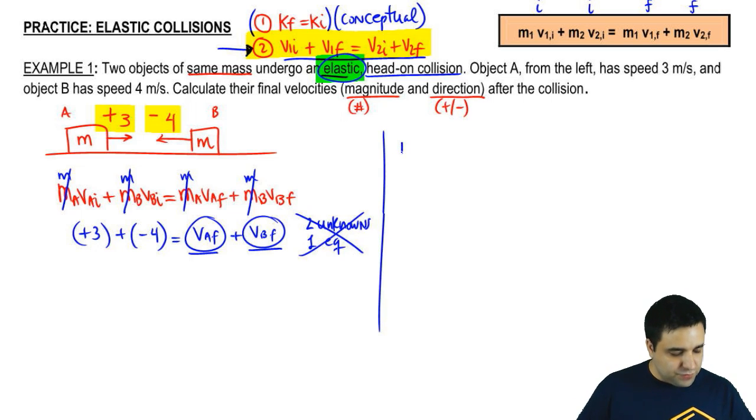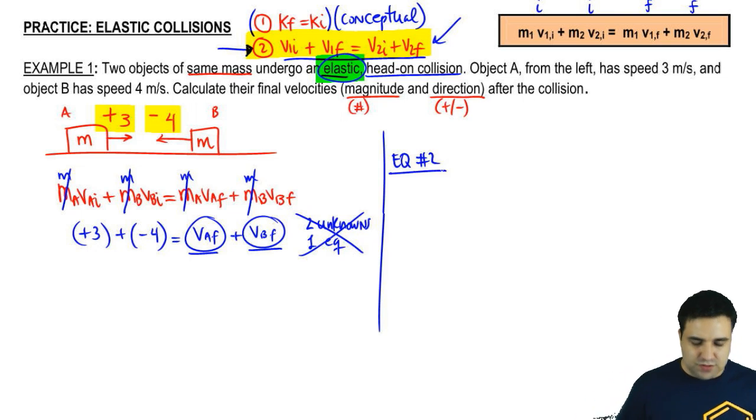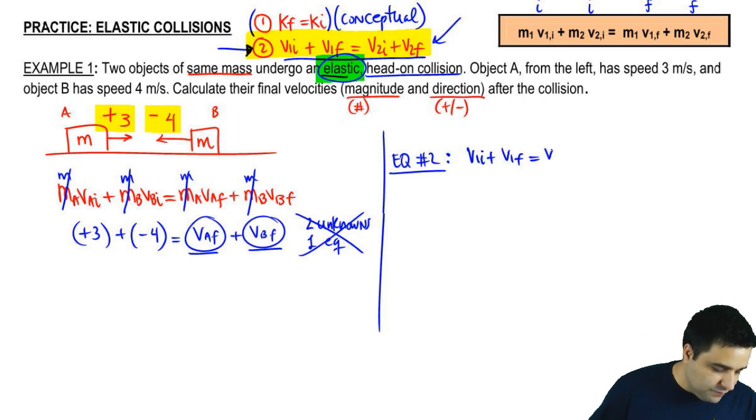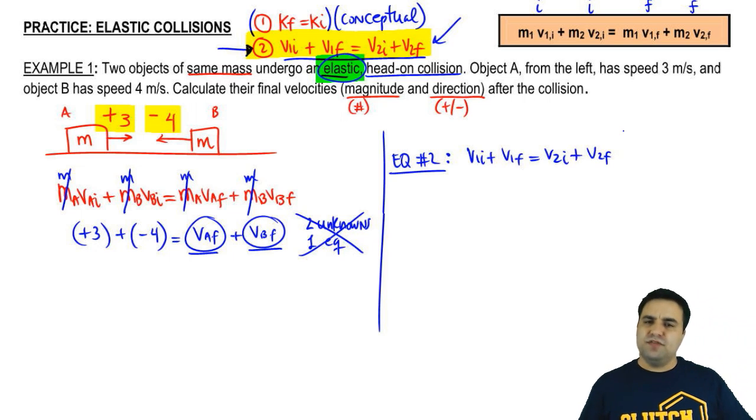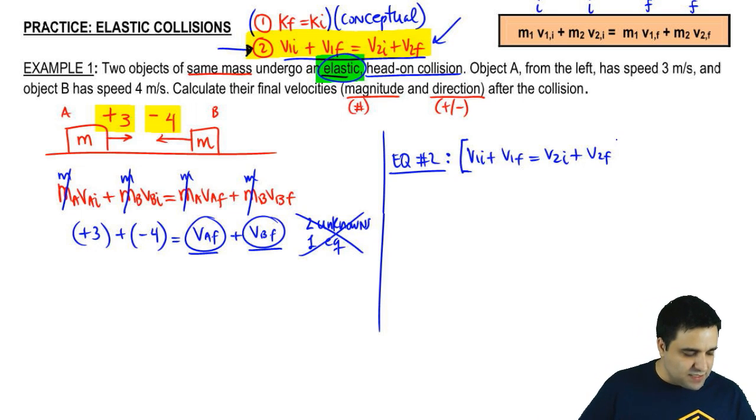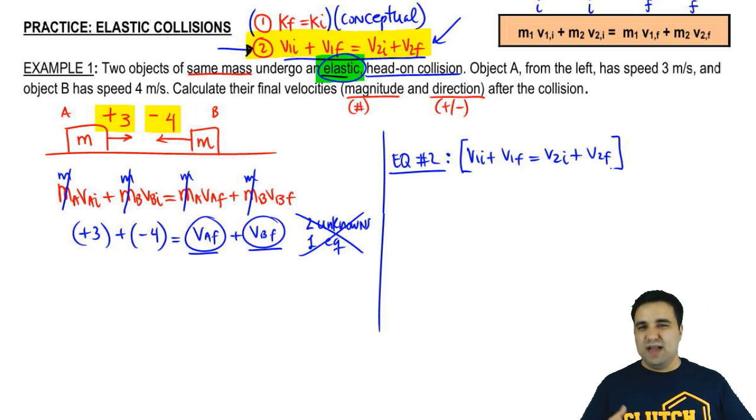So, the other equation that you're going to use is this one right here. You're going to use the equation, the special equation for elastic collision. So, V1 initial plus V1 final equals V2 initial plus V2 final. By the way, there's a few different versions of this equation. Some of them have, like, negatives in them and whatnot. I moved things around, and I showed to you this way because I think it's the easiest one to remember, but you might see a slightly different version.